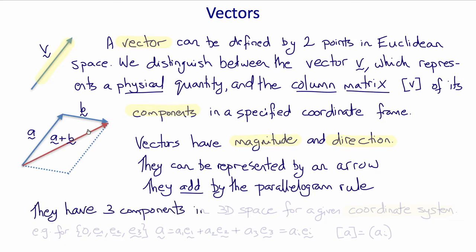Vectors have three components in three dimensional space for a given coordinate system. For example, with the coordinate system with origin o and unit vectors e1, e2, and e3,